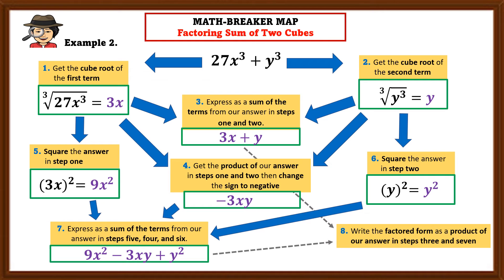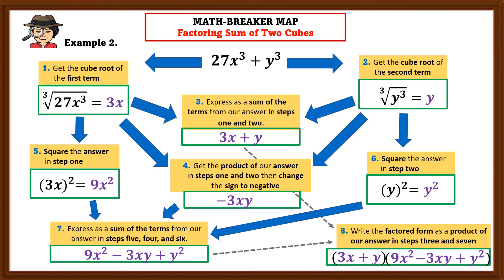The last step is to write the factored form as a product of the answers in steps 3 and 7: (3x + y)(9x² − 3xy + y²). To check, multiply (3x + y)(9x² − 3xy + y²). The result should equal the given sum of two cubes, 27x³ + y³. Therefore our factored form is correct.